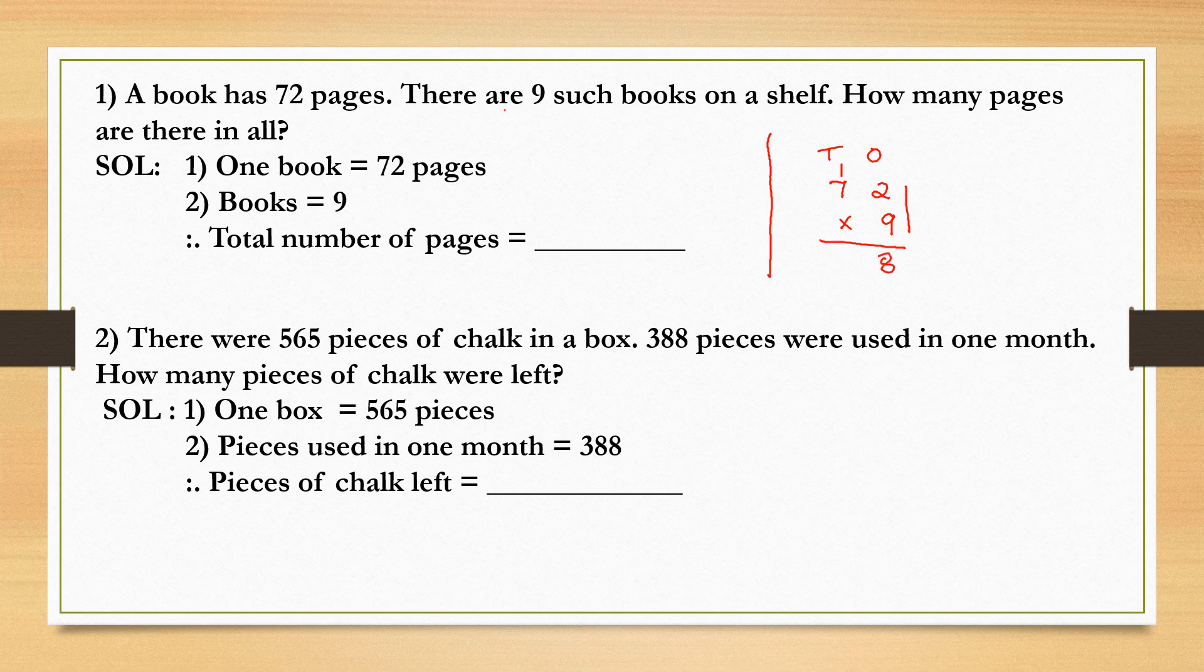And turn the table of 9. 9 times 7 is 63. Write here and put a circle and plus symbol. Now 63 plus 1 gives you 64. And what answer did you get? Therefore, total number of pages equals 648 pages.